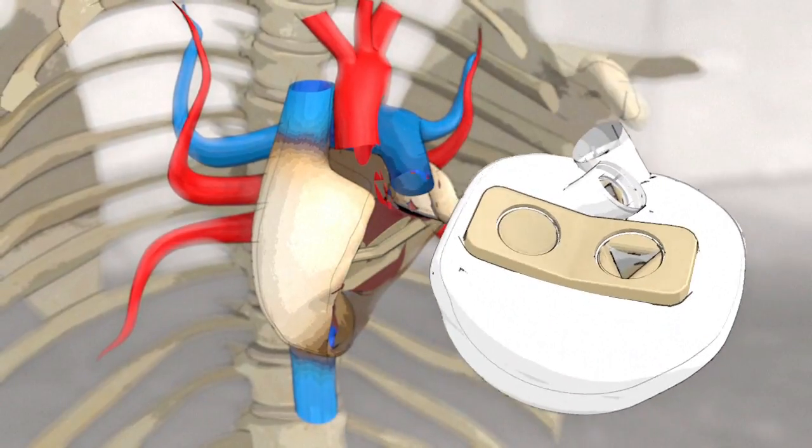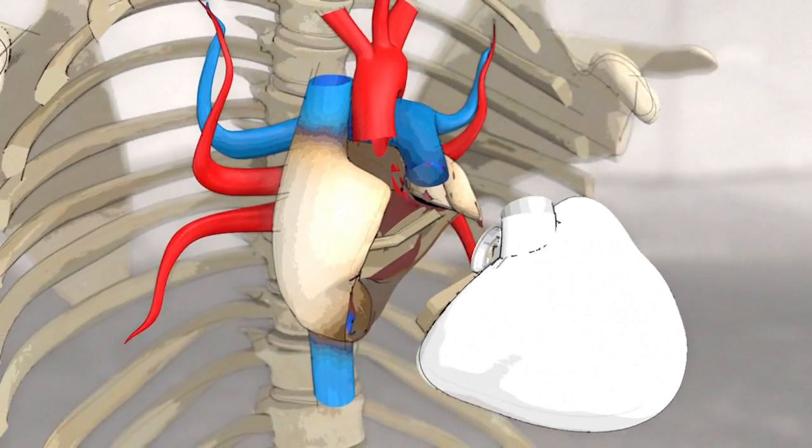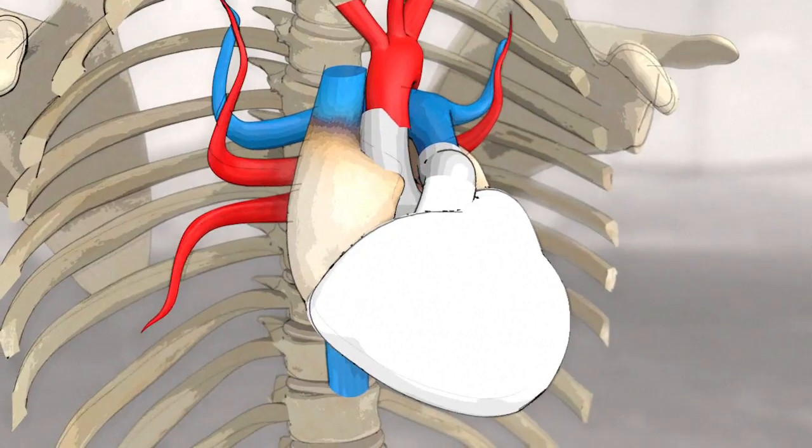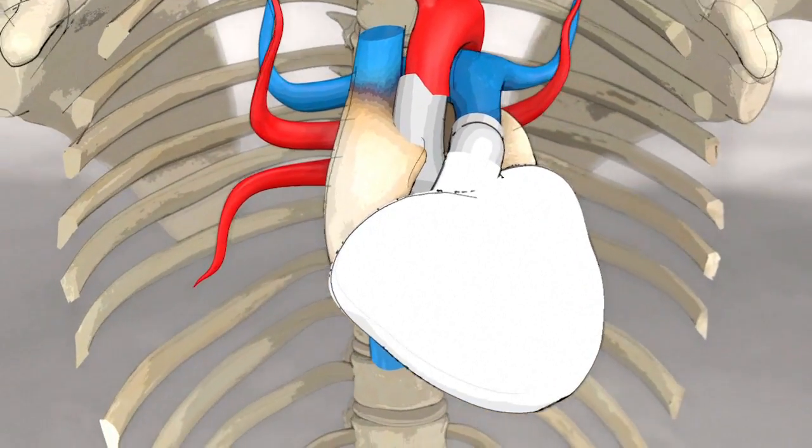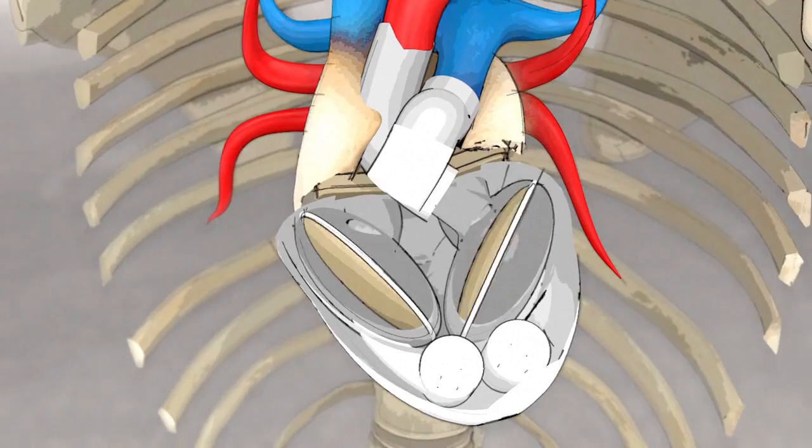The device, comprising two ventricular cavities and four valves, clips onto this interface. Both ventricular cavities are divided into two parts, each separated by a double-sided biomembrane.